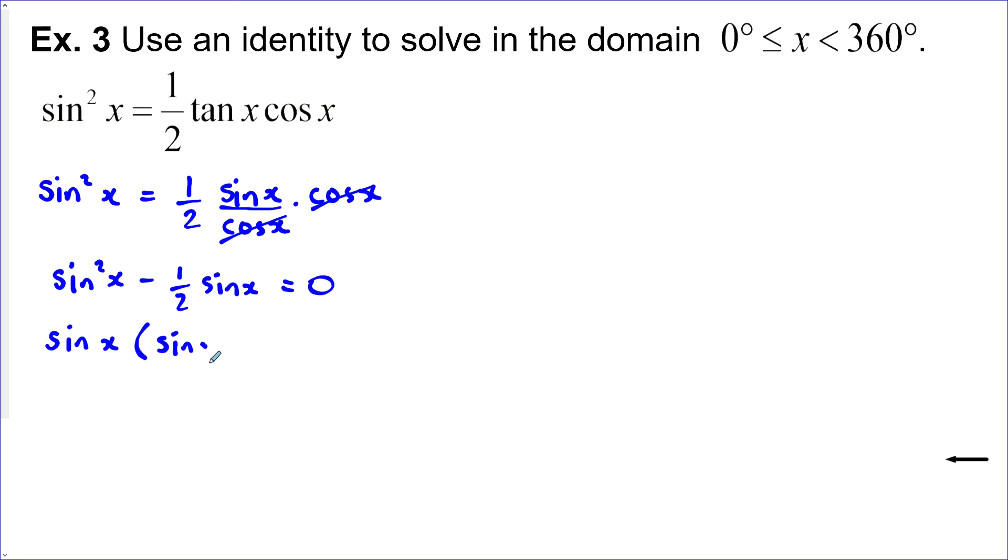And we're left with sine x minus a half here. And now we just need to solve these. If for this first part we have sine x is equal to zero and for this second part we've got sine x minus one half is equal to zero.